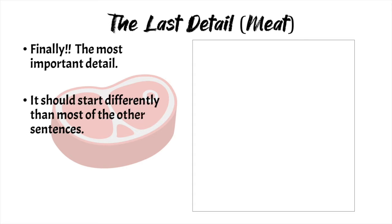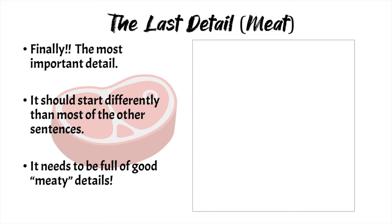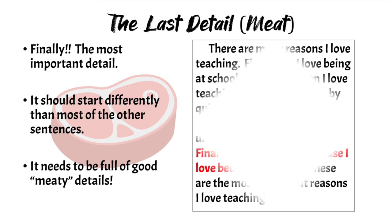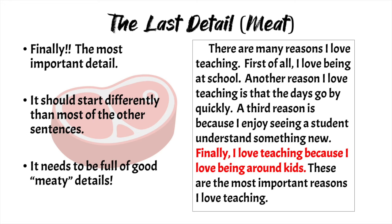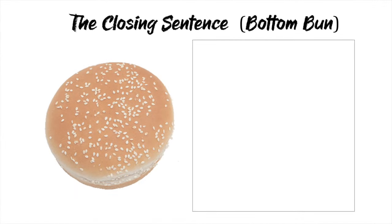The last detail is the meat — finally, the most important detail. It should start differently than most of the other sentences and be full of good meaty details. Like in the example: 'Finally, I love teaching because I love being around kids.' That's the last and most important detail.